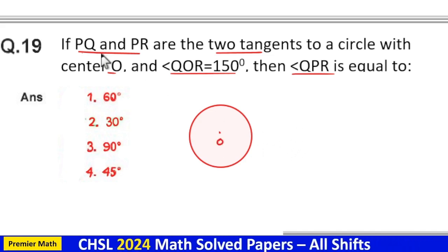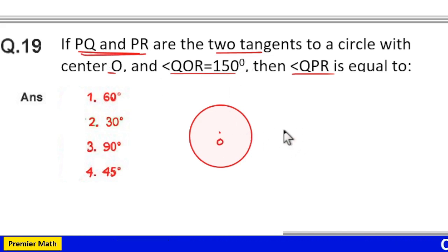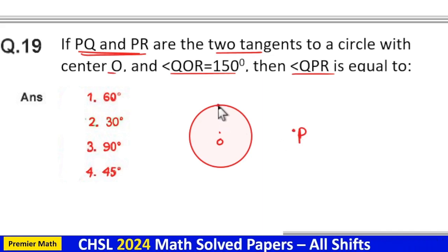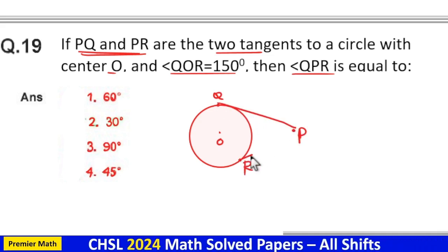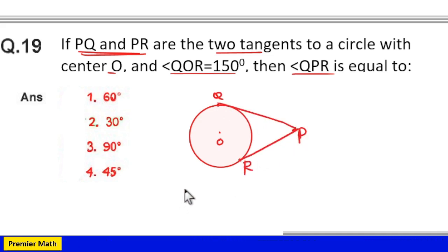Now PQ and PR are two tangents, means P is the common point. Now this is Q and this is R. PQ and PR are two tangents.